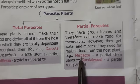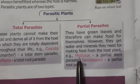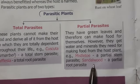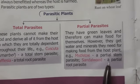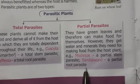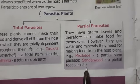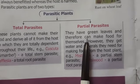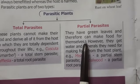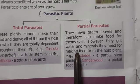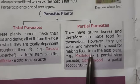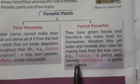Mistletoe — where the T is silent — is a partial stem parasite, and sandalwood is a partial root parasite. So partial parasites can make their own food, but for water and minerals they depend on the host plant.